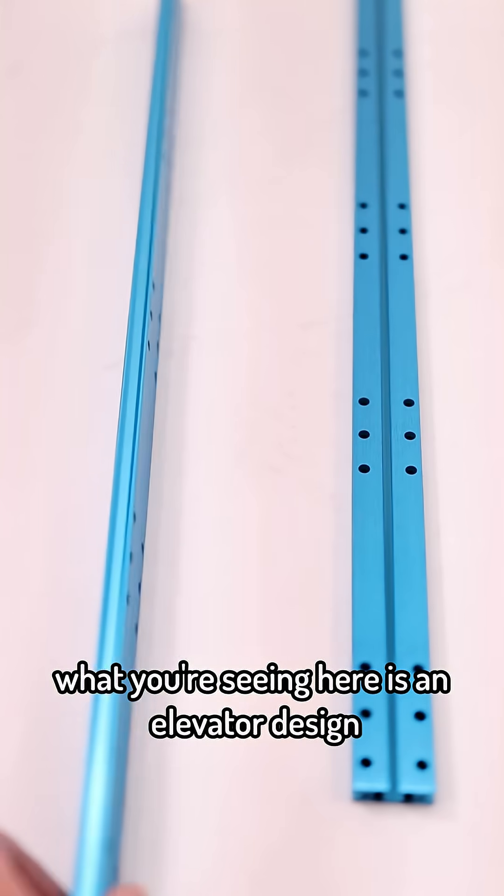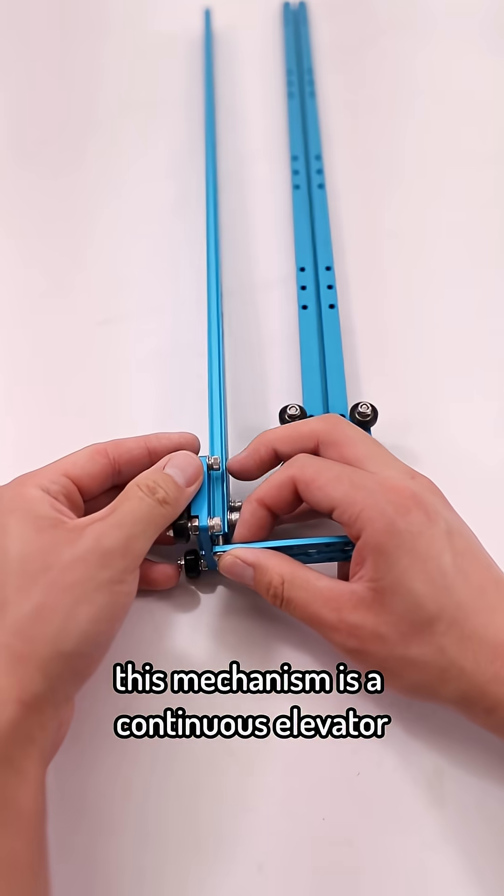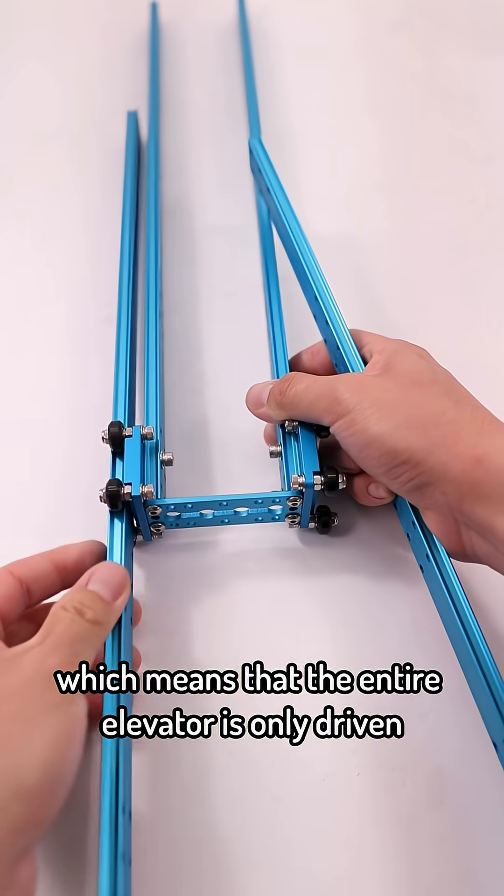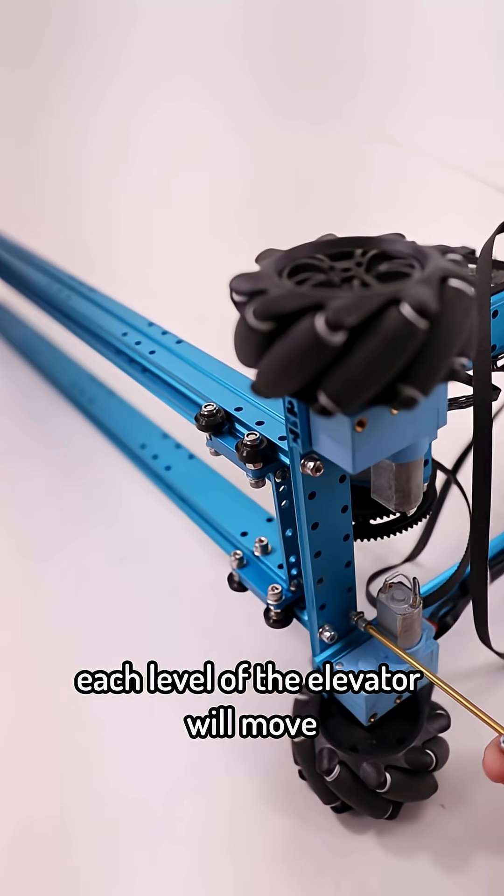What you're seeing here is an elevator design built completely with makeblock parts. This mechanism is a continuous elevator, which means the entire elevator is only driven with one singular belt, compared to a cascade design where each level of the elevator would move before the other.